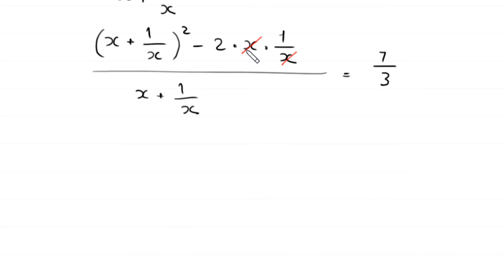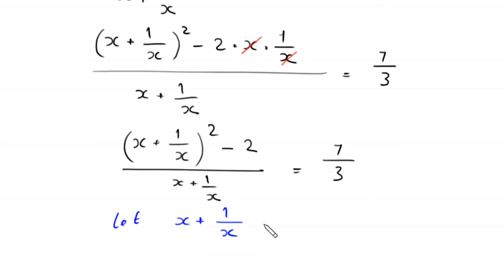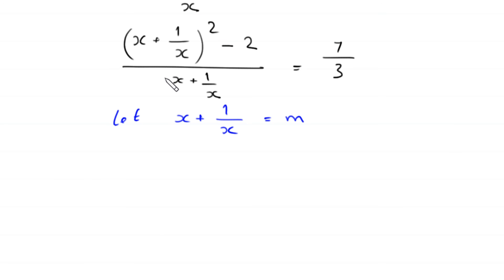The 2·x·(1/x) simplifies, and the equation becomes (x + 1/x)² − 2, divided by (x + 1/x), equals 7/3. We now substitute: let x + 1/x = m. So the equation becomes (m² − 2) / m = 7/3.